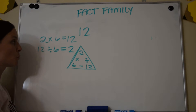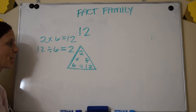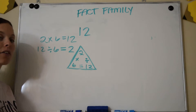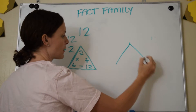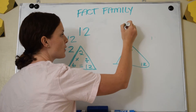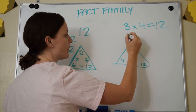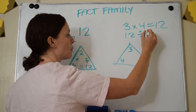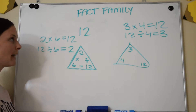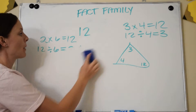Did you know 12 has another fact family? The other fact family for 12 is 3 and 4, because 3 times 4 equals 12. And because it's a fact family, I can say that 12 divided by 4 gives me 3. That is how we relate multiplication to division using fact families.